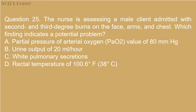Question 25. The nurse is assessing a male client admitted with 2nd and 3rd degree burns on the face, arms, and chest. Which finding indicates a potential problem? A. Partial pressure of arterial oxygen (PaO2) value of 80 mmHg. B. Urine output of 20 mL per hour. C. White pulmonary secretions. D. Rectal temperature of 100.6 degrees Fahrenheit (38 degrees Celsius).